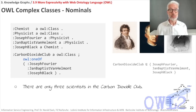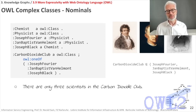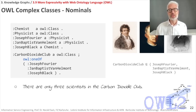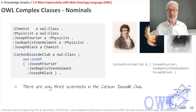First, before we go to the really complex stuff, we want to define classes by stating what all the members of a class are — these are the so-called nominals or enumerated classes, also called closed classes. For example, the Carbon Dioxide Club has exactly three members: Joseph Fourier, Jan Baptist van Helmont, and Joseph Black. Only three — nobody else. This is a closed society.